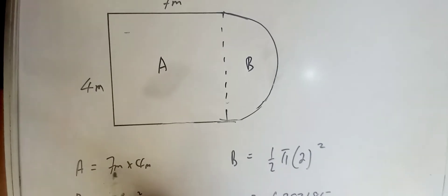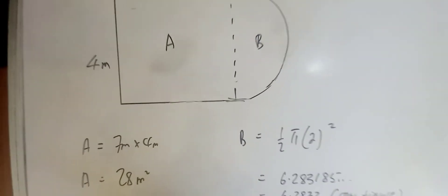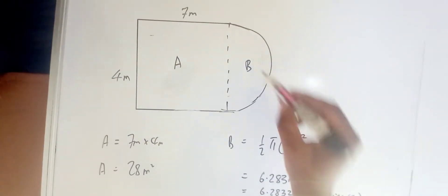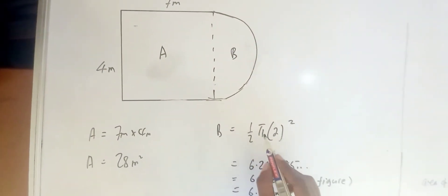The rectangle is length times width, which gives you 28 square centimeters. And then the semicircle—remember the area is half pi r squared.